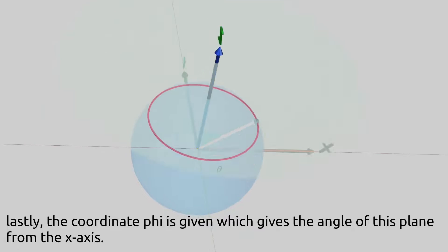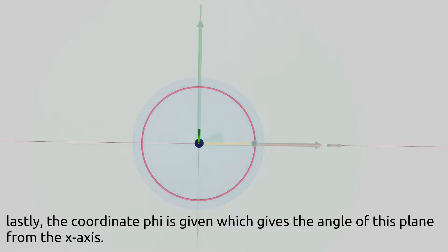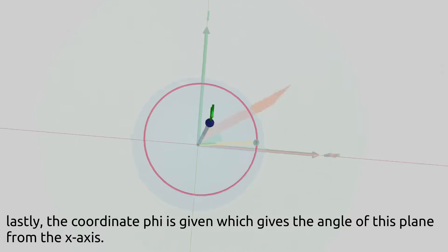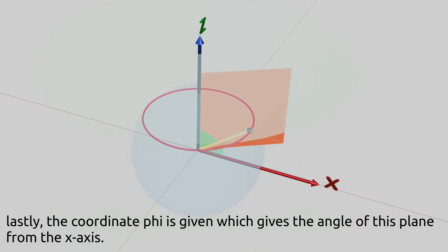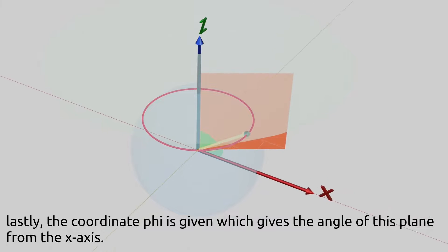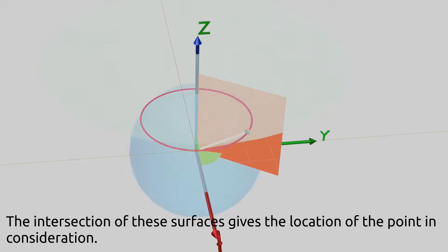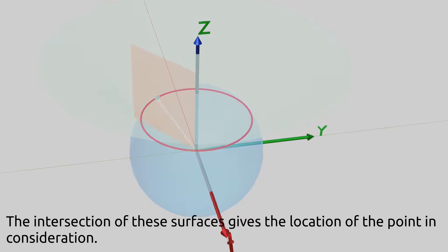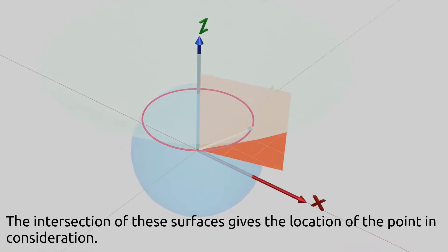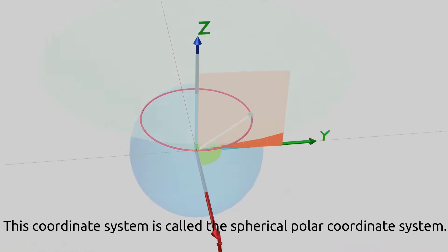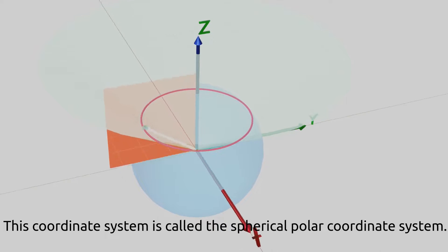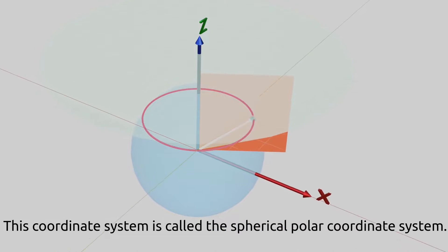Lastly, the coordinate phi is given, which gives the angle of this plane from the x axis. The intersection of these surfaces gives the location of the point in consideration. This coordinate system is called the spherical polar coordinate system.